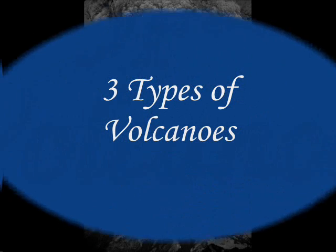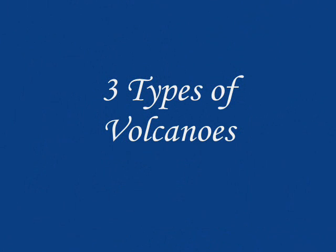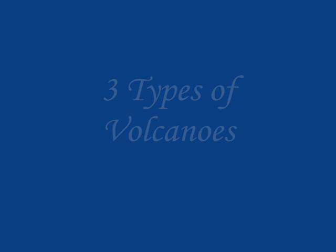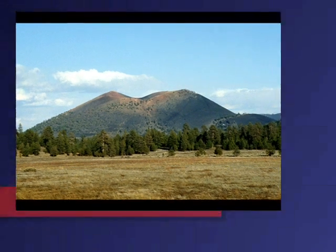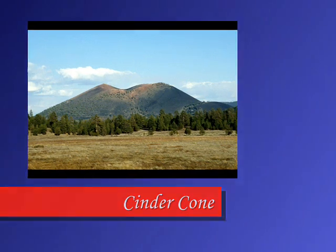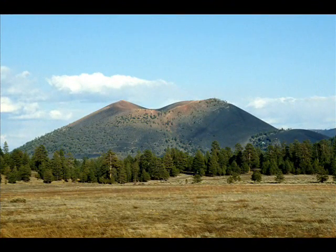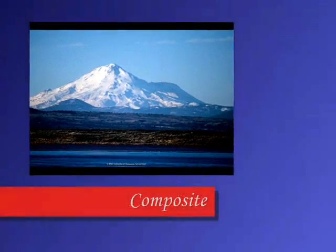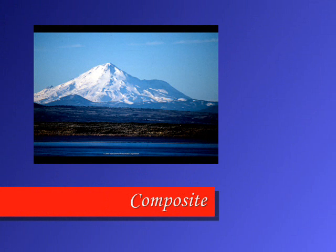There are three types of volcanoes. A cinder cone volcano is built by thick lava that is thrown high into the air and falls as chunks or cinders. A composite volcano is built by layers of ash and cinders sandwiched between layers of hardened lava.